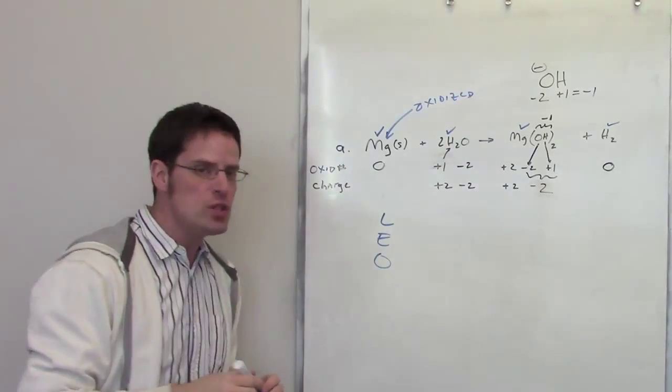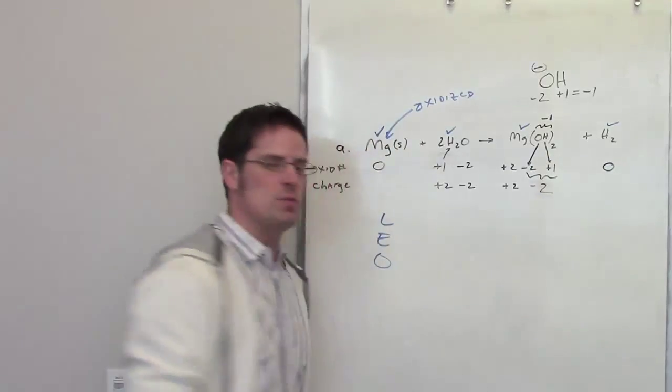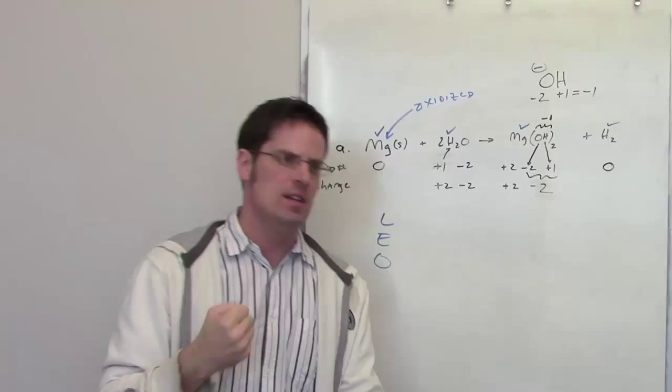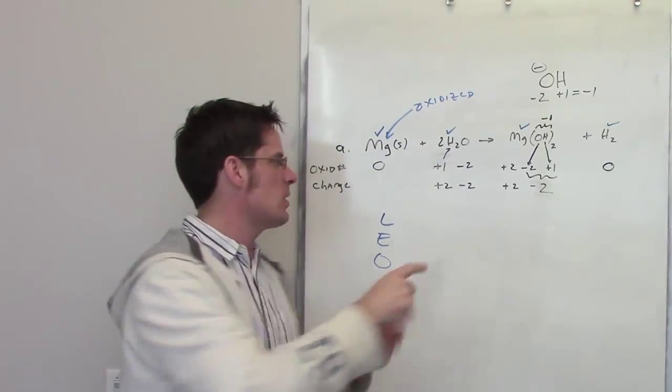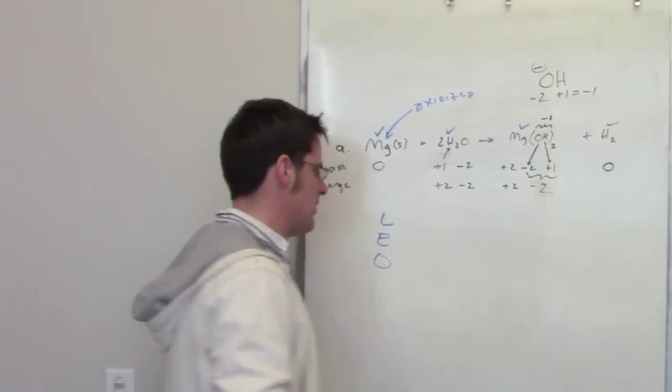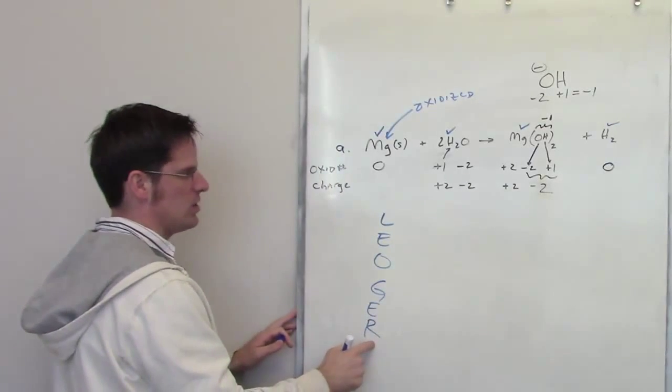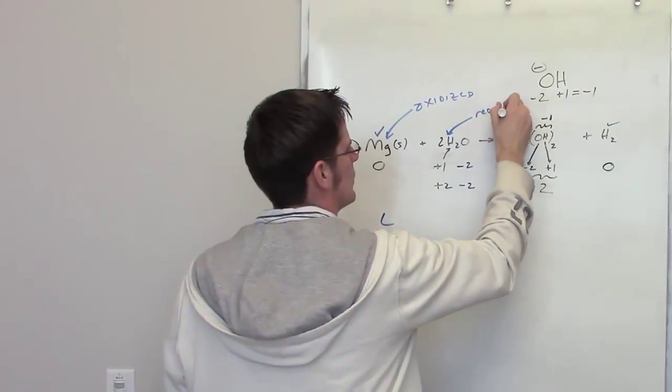Now, which element has been reduced? Well, hydrogen goes from being plus one to being zero. So it's becoming less positive or, better said, more negative. How do you do that as an element? By receiving electrons. So it goes from being plus one to being zero. It's received electrons. If you're receiving or gaining electrons, what does that mean? It means reduction. So this hydrogen has been reduced.